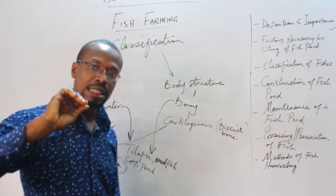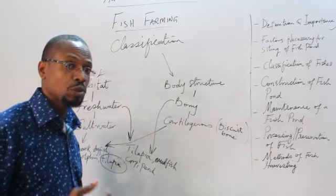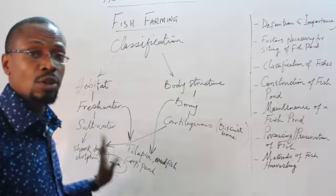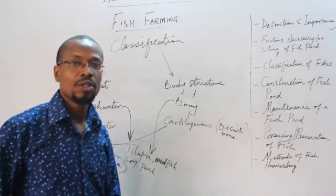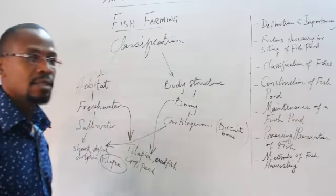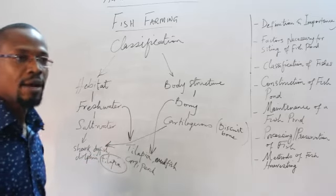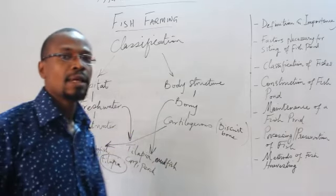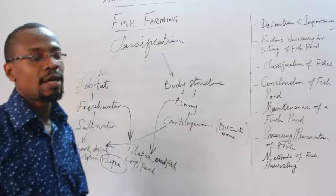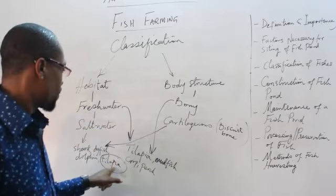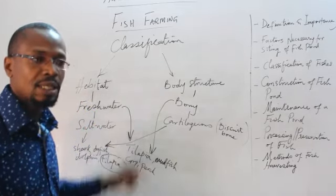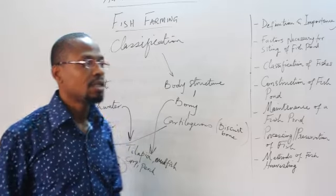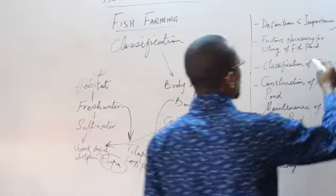Cartilaginous fishes are often found in the saltwater environment, while the bony structured fishes are often found in the freshwater environment. But remember, tilapia shares both environments — the freshwater habitat as well as the saltwater habitat.